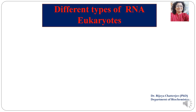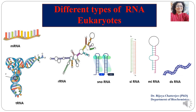Good morning everyone. Today yet another topic of molecular biology will be discussed — the different types of RNA. On the first slide itself you can see the different types of RNAs. The most commonly known types are the mRNA, the tRNA and the rRNA. But apart from these three commonly known RNAs, eukaryotes have many other types of RNAs with different functions. So today that is exactly what we will try and discuss.